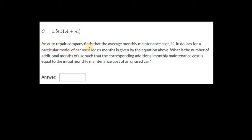Let's read. An auto repair company finds that the average monthly maintenance cost for a particular model of car used for m months is given by the equation above. You have an equation where c is the cost and m is the months the car has been used for. What is the number of additional months of use? The word 'additional months of use' tells us that we need to find the change in m such that the corresponding additional monthly maintenance cost...